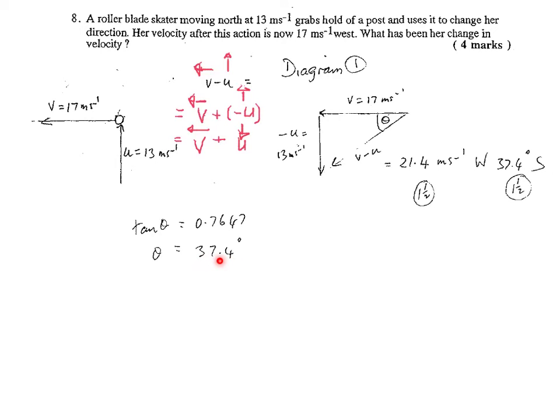So the direction her velocity has changed is West 37.4 degrees South, which is what we've got there.